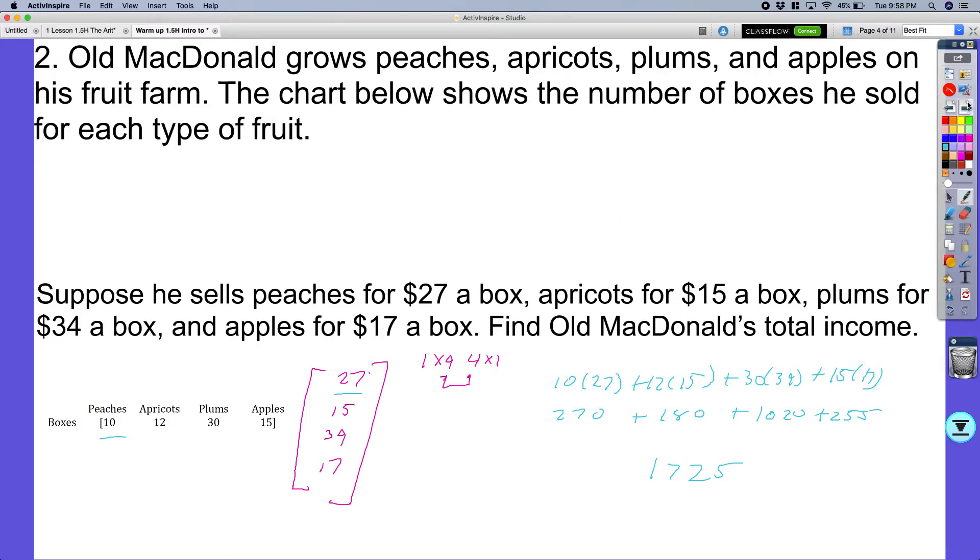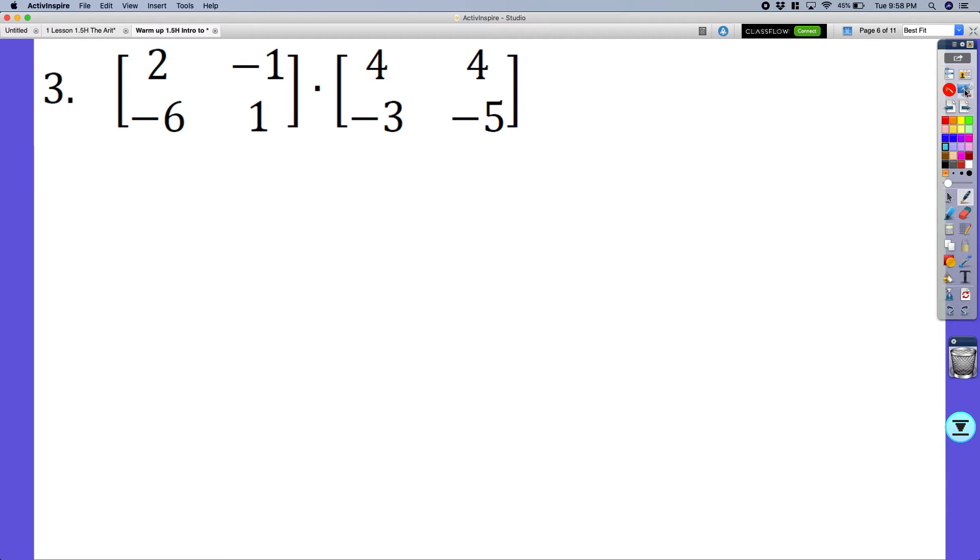Let's go ahead and jump over in here. We have these matrices and what we're going to do is figure out if I can actually get a solution. If I can, I'm going to solve them. And if I can't, I'm going to write undefined. So this is a 2 by 2 and a 2 by 2. As we talked about, these are the same and I can multiply these. So we're only going to do two of these. We're going to do three of these.